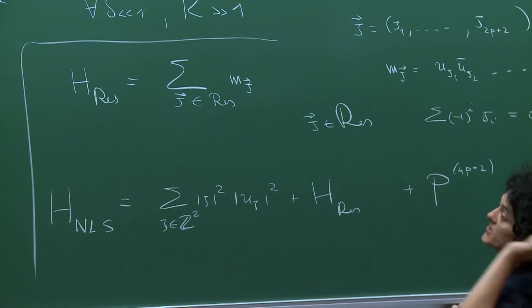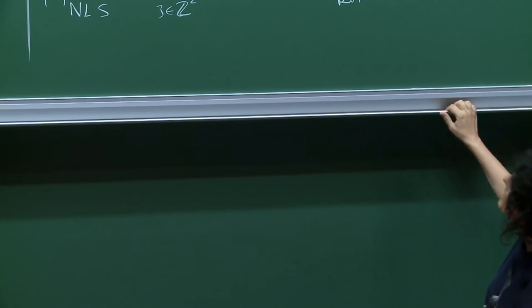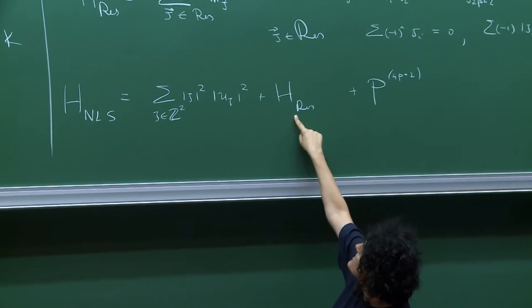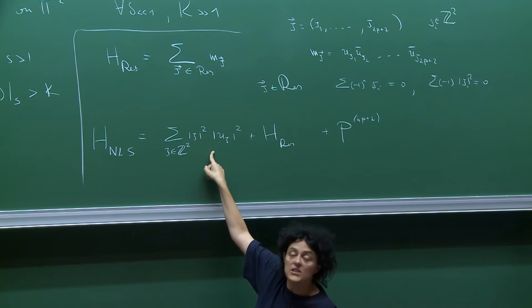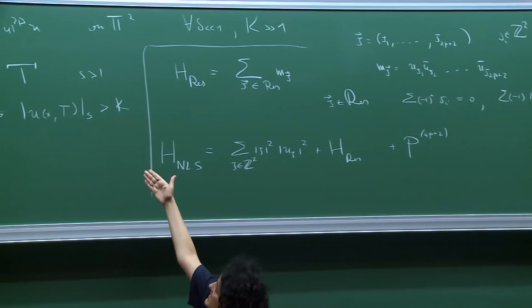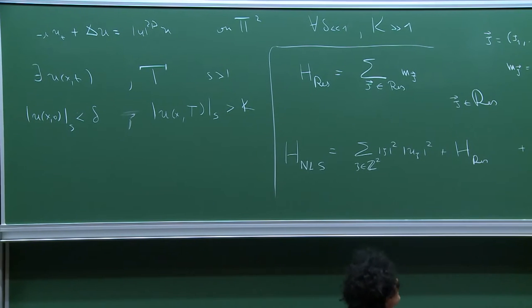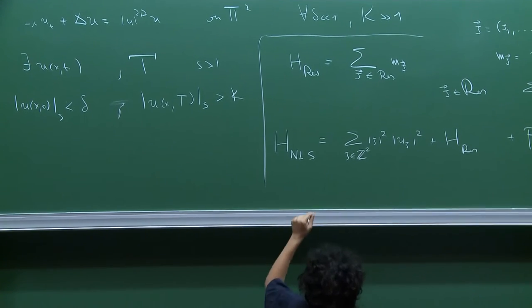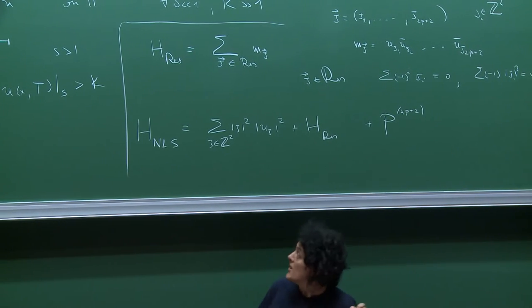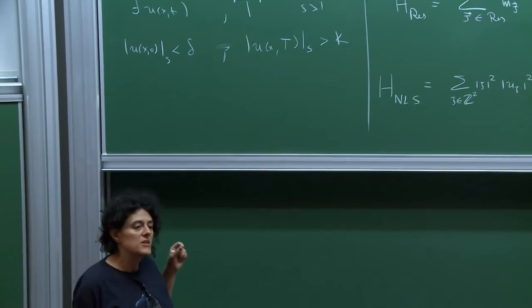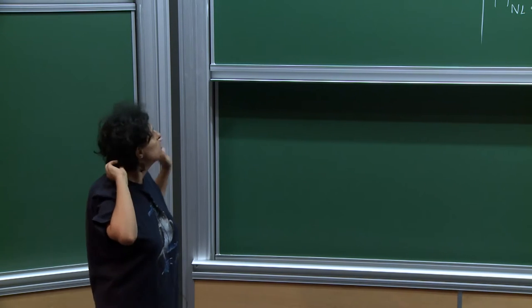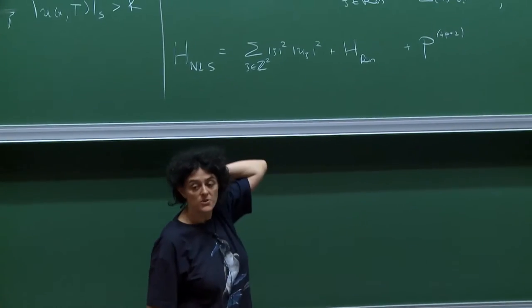My argument, as it was for the quasi-periodic solutions, will be to prove solutions of this type for the Birkhoff Hamiltonian. Since the resonant part Poisson-commutes with the degree-2 term, I can just study H_res. Since the solutions I am finding are finite-time solutions, provided I'm sufficiently close to 0 in L1 norm, I can claim that the higher-degree piece is negligible. In the case of yesterday it was more complicated because it was not a finite-time solution, so I really had to do a KAM theorem. But here the argument is relatively standard.